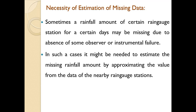Sometimes a rainfall amount at a certain rain gauge station for certain days may be missing due to absence of some observer or instrumental failure. In such cases it is needed to estimate the missing rainfall amount by approximating the value from the data of the nearby rain gauge stations.